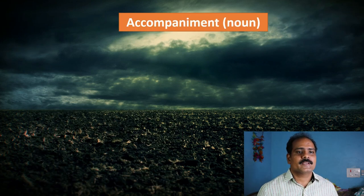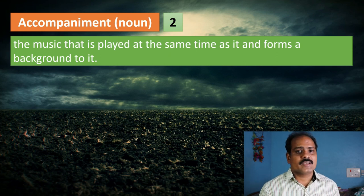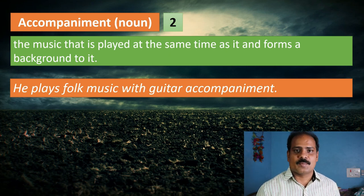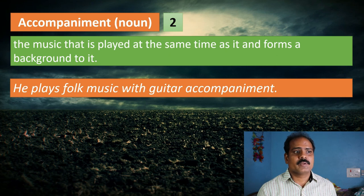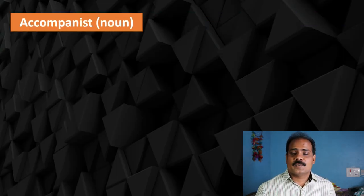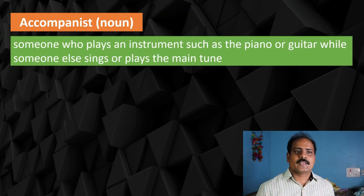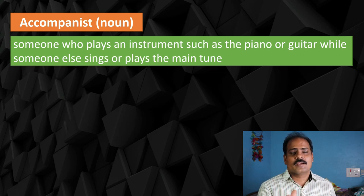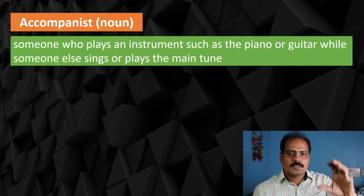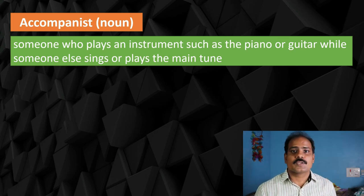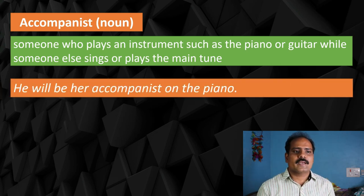The second meaning of accompaniment is the music that is played at the same time as something else and forms background to it. For example: 'He plays folk music with guitar accompaniment.' Now let's look at the noun accompanist — someone who plays an instrument such as violin or guitar while someone else sings or plays the main tune. For example: 'He will be her accompanist on the piano.'